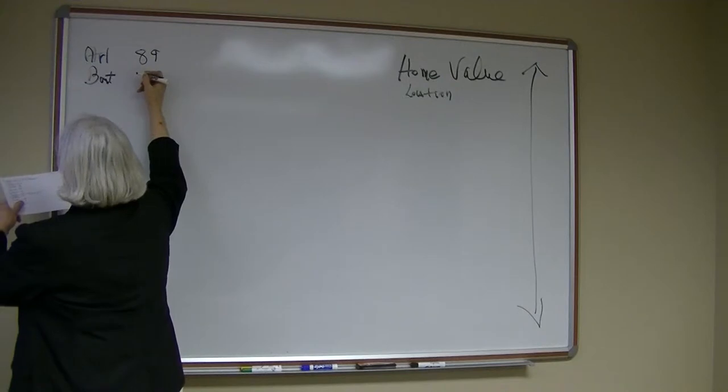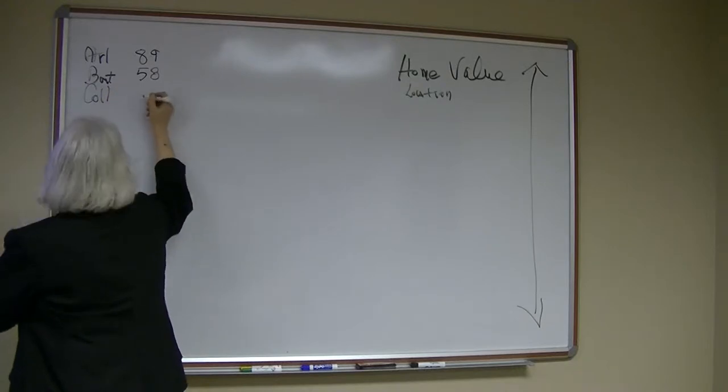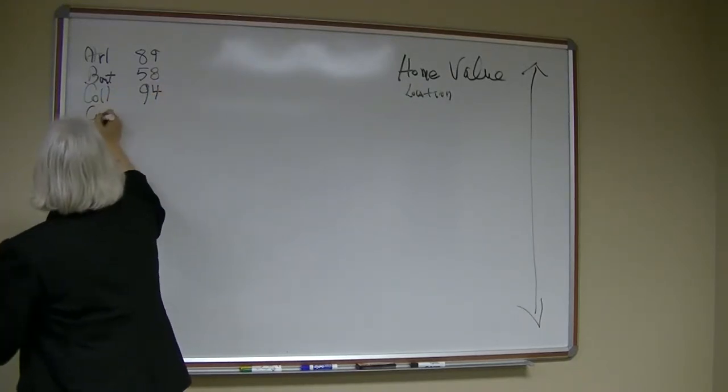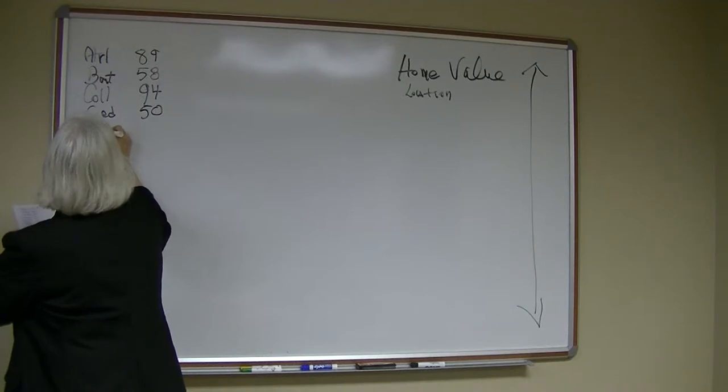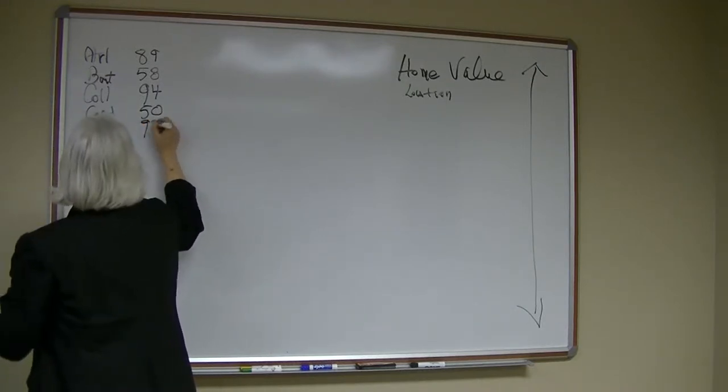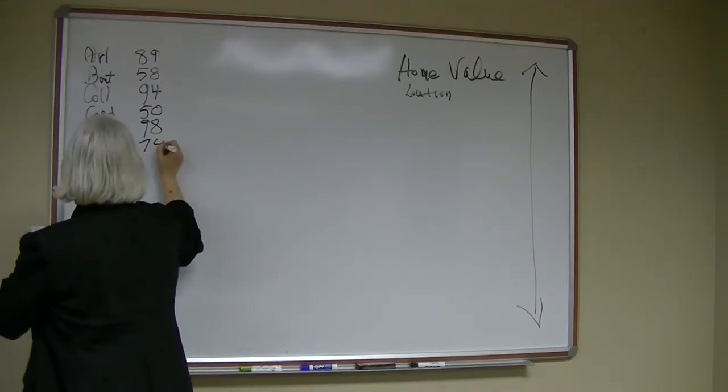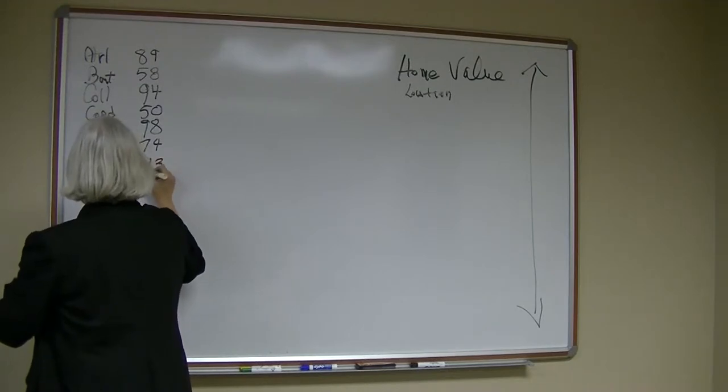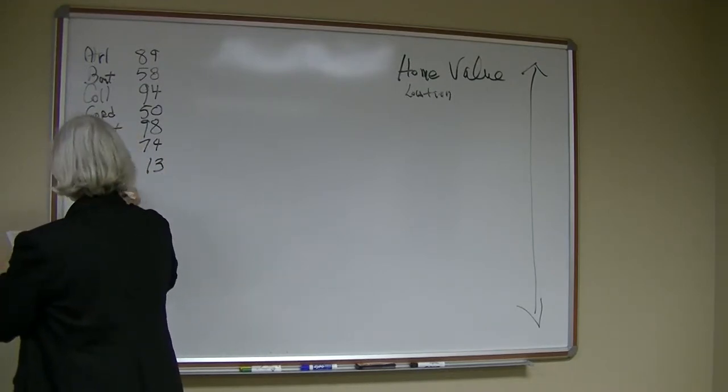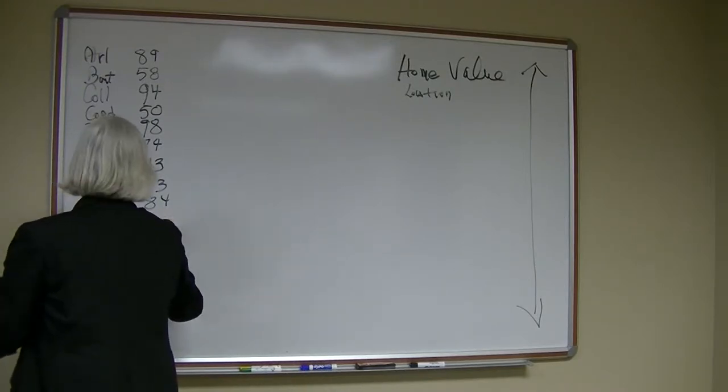Bartlett is $58 a square foot. Collierville is the highest, which is a surprise, at $94 a square foot. Cordova, $50 a square foot. Downtown is the second highest at $98 a square foot. East Memphis, $74 a square foot. Frazier, this is a shocking figure, $13 a square foot. Germantown, $83. Lakeland is $84. And Millington is $51 a square foot.